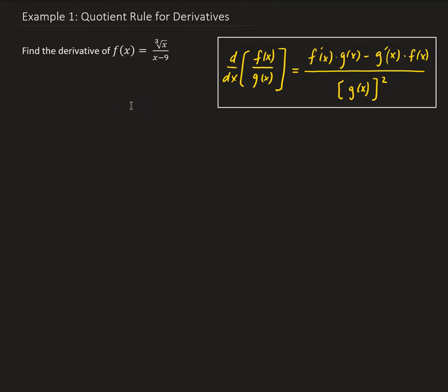In this example, we want to find the derivative of the function given here, which is the cube root of x divided by x minus 9. To do this, we're going to use the quotient rule. We're going to call the numerator f of x, and let's call the denominator g of x.